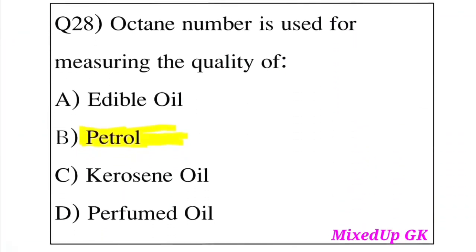Question 28: Octane number is used for measuring the quality of which of the following? Option A: Edible oil. Option B: Petrol. Option C: Kerosene oil. Option D: Perfume. The answer is Option B, Petrol.